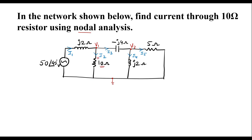So now we need to apply KCL to each node — that is, apply Kirchhoff's current law to node V1 first. We know that KCL says that incoming current is equal to outgoing current. At this node, current I1 is incoming, and I2 and I3 are leaving the node. So I can write I1 is equal to I2 plus I3.